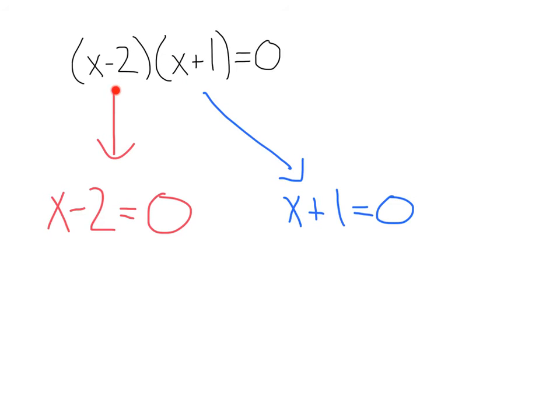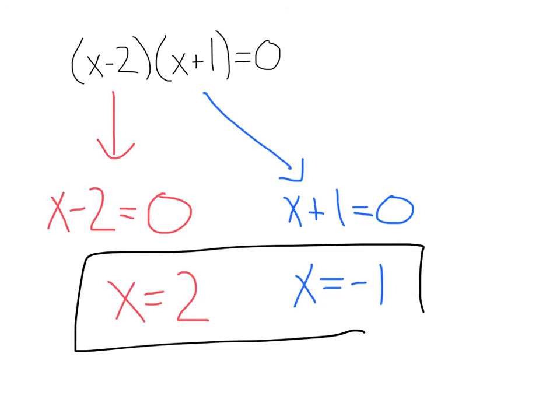Lastly, we can set each factor equal to 0: x - 2 = 0 and x + 1 = 0. Solving from there, you get our answers, x = 2 and x = -1. Like always when solving equations, feel free to plug these back in and double check to make sure it's correct.